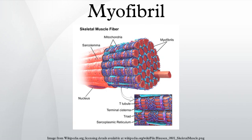They are created during embryonic development in a process known as myogenesis. Myofibrils are composed of long proteins including actin, myosin, and titin, and other proteins that hold them together. These proteins are organized into thick and thin filaments called myofilaments, which repeat along the length of the myofibril in sections called sarcomeres.